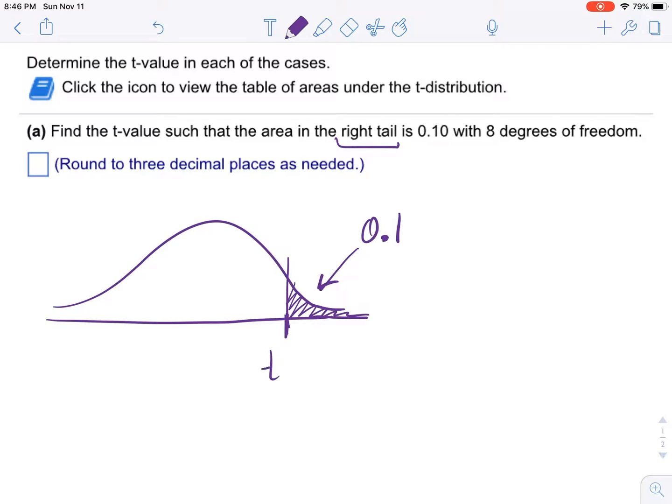looking for t alpha over 2. Whenever we're trying to find a t-score or a z-score, that's the case when you use inverse t. We're going to put in 0.9 actually, and then the degrees of